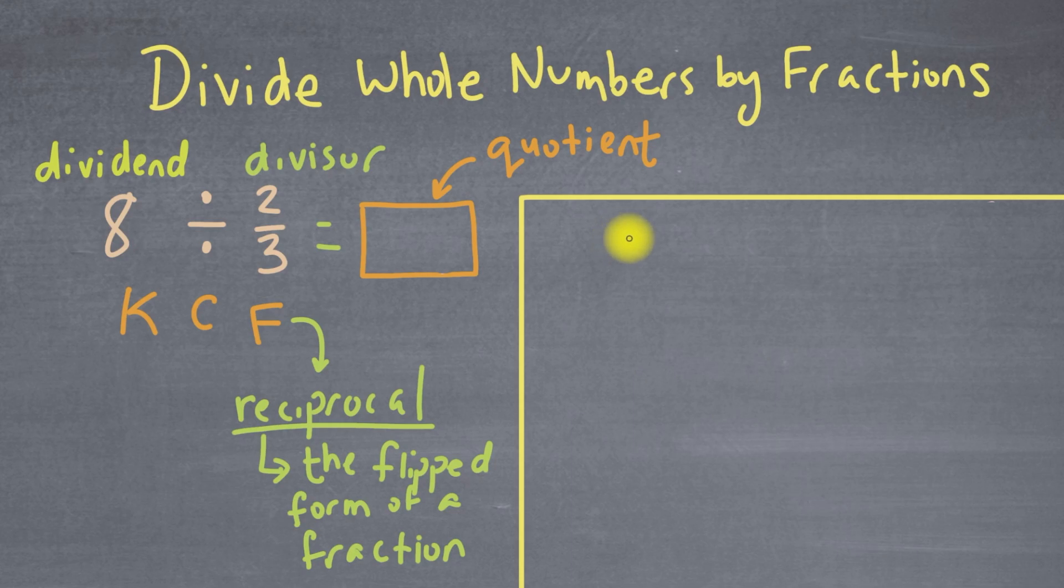So let's do that. So here we'll have 8 over 1 divided by 2 over 3, and we don't know what it equals yet. So let's get to work. So we're going to keep this 8 over 1. So I'll put a K here for keep. I'm going to keep that 8 over 1, and keep just means it's going to stay the same.